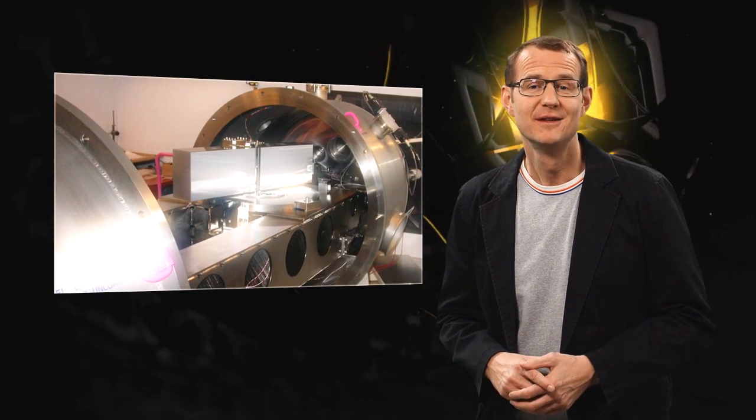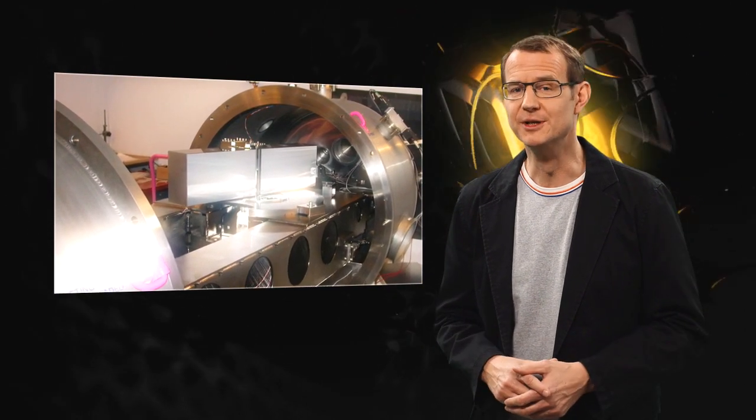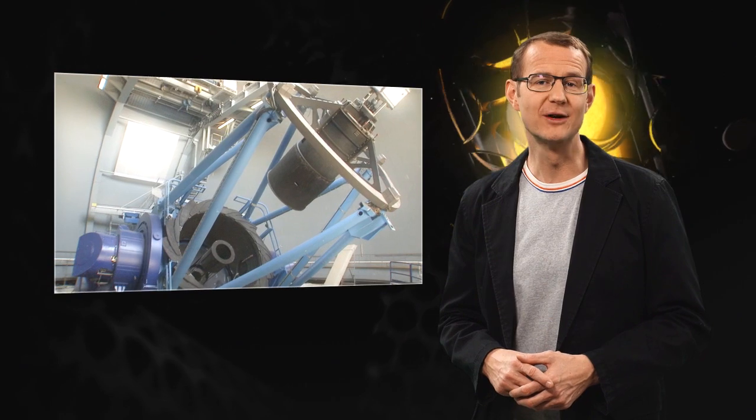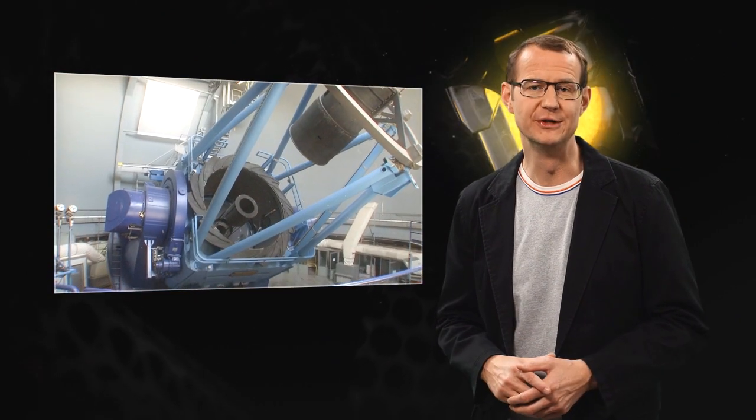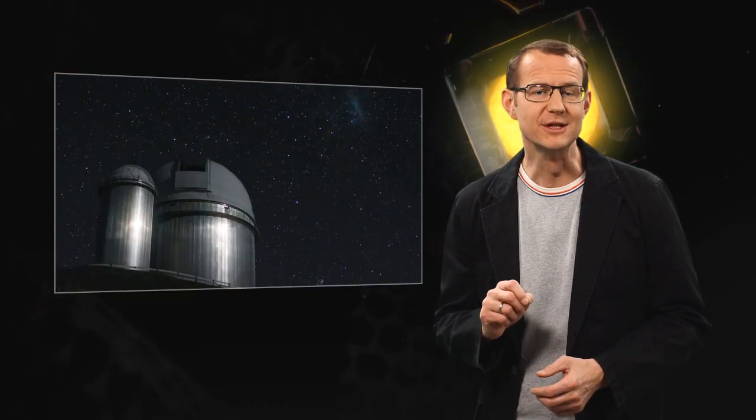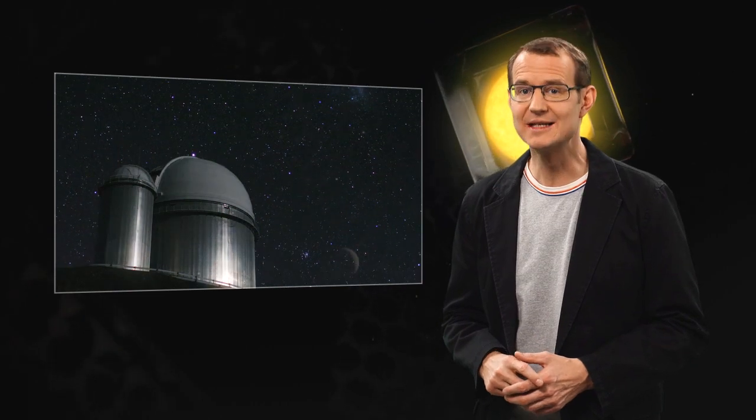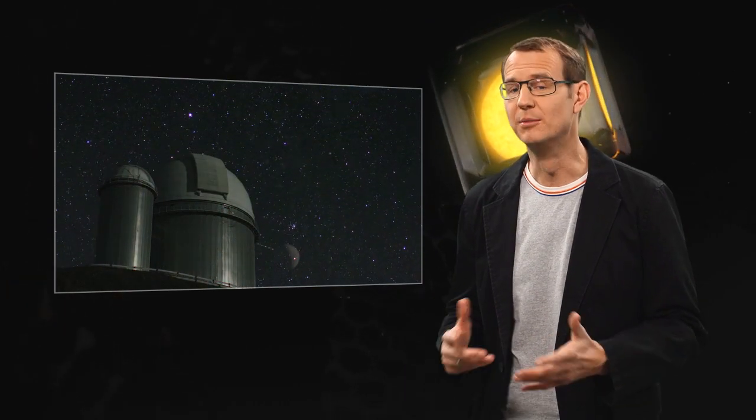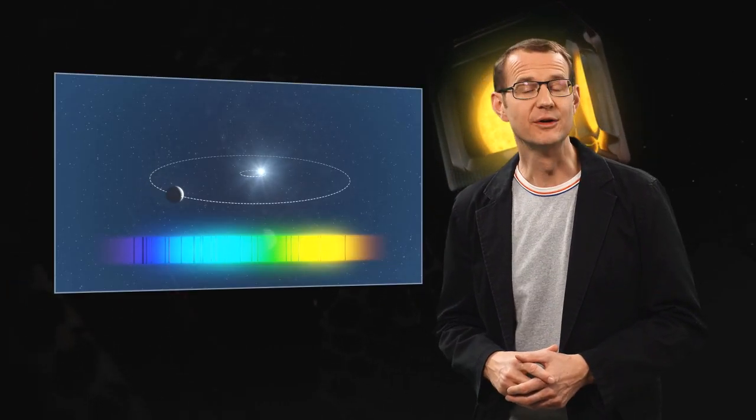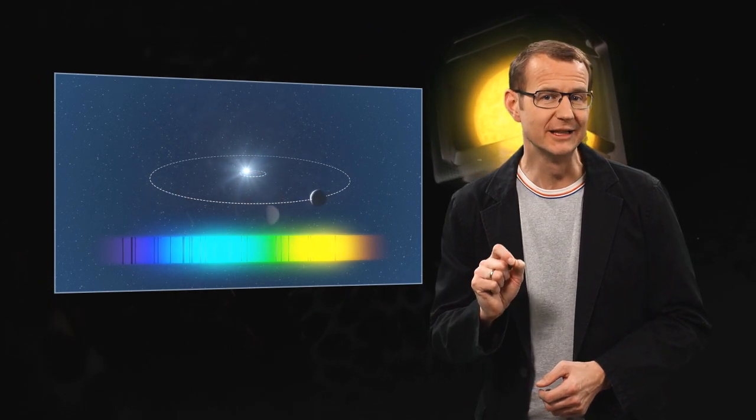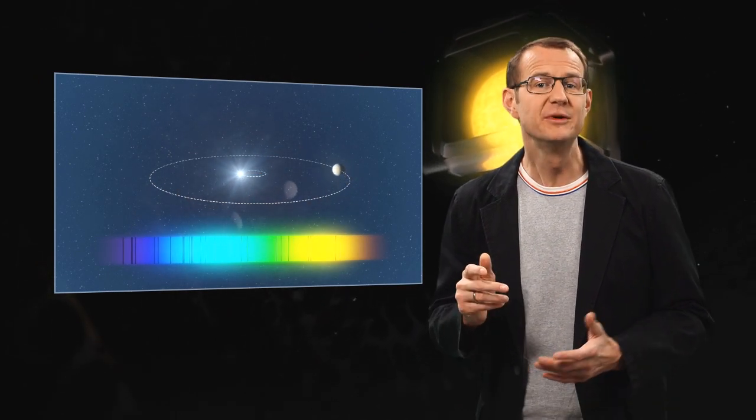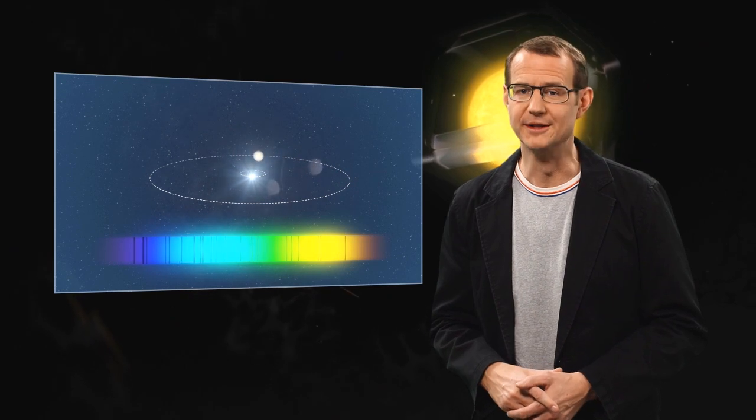To find the new exoplanets, the astronomers used the HARPS instrument on the 3.6-metre telescope at ESO's La Silla Observatory. They carefully monitored 88 selected stars in Messier 67 for a number of years. That allowed them to look for the tiny telltale motions of the stars that reveal the presence of orbiting planets.